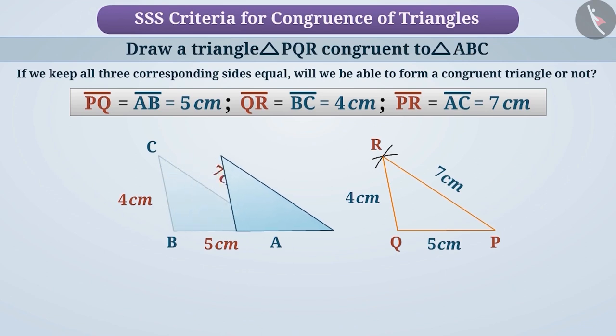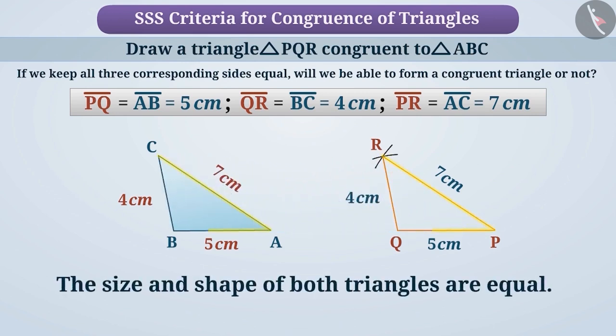Now, we will join it with P. If we place triangle ABC on triangle PQR, we observe that they cover each other completely, which means that both triangles have the same size and shape. Hence, both triangles are congruent.